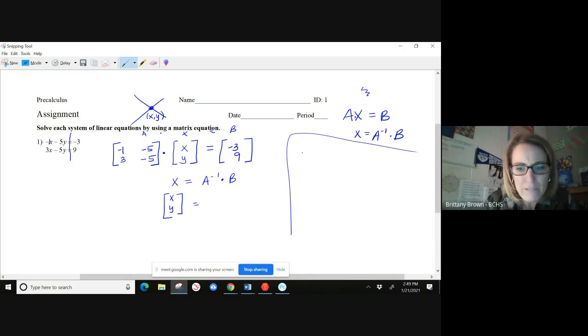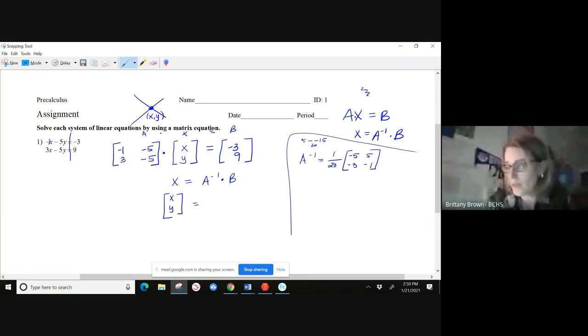All right, so your inverse is going to be one over the determinant of our matrix here. So that's five minus negative 15. Five minus negative 15. So that becomes 20. So we've got one over 20 there. Okay, now remember when you're doing the inverse, we switch these elements, a and d. The signs on b and c change, but the elements do not change positions. So that's what we're looking at right there.